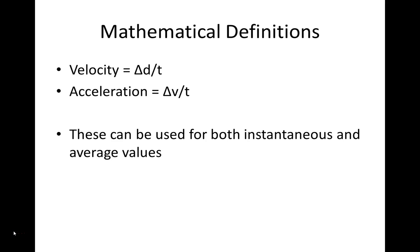A little bit of review: the mathematical definition of velocity is essentially how quickly the distance is changing. If you're traveling at 20 meters per second, every second you'll traverse a distance of 20 meters. Acceleration, on the other hand, is how quickly that velocity is changing — so if you're accelerating at 20 meters per second per second, after one second you'll be traveling at 20 meters per second.